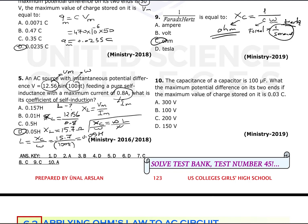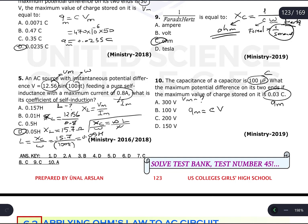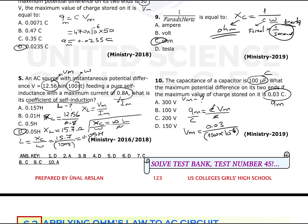Question number ten: the capacitance of a capacitor is 100 microfarad. What is the maximum potential difference on its two ends if the maximum charge stored is 0.03 coulombs? Since Q_max = C × V_max, we rearrange to V_max = Q_max / C = 0.03 / (100 × 10⁻⁶).